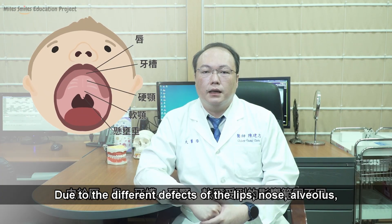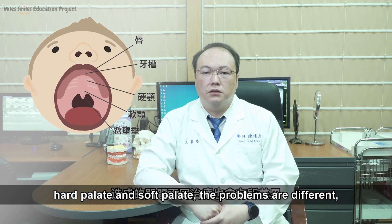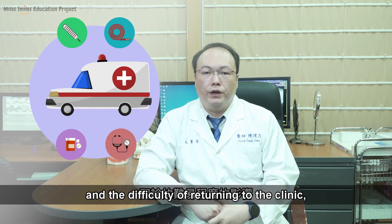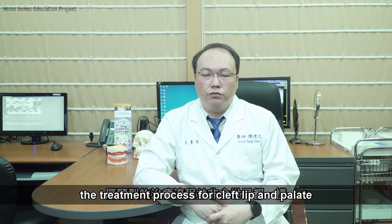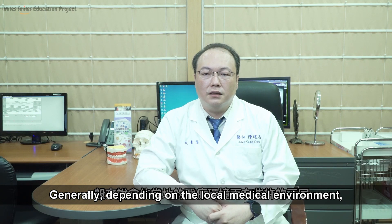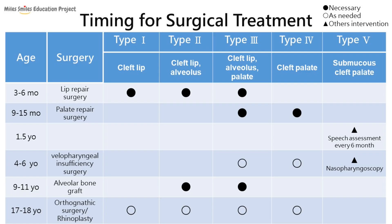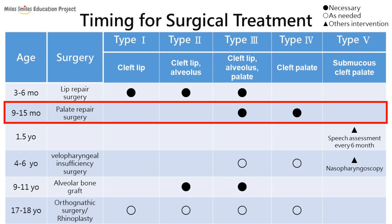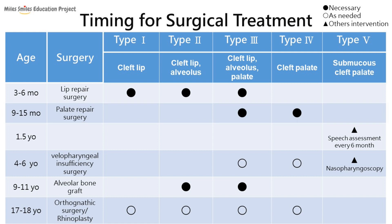Due to the different defects of the lips, nose, alveolus, hard palate, and soft palate, the problems are different and the treatments will also be different. Depending on the different medical insurance systems and the difficulty of returning to the clinic, the treatment process for cleft lip and palate is not the same throughout the world. Generally, depending on the local medical environment, children with cleft lip and palate may undergo several surgeries. Lip repair surgery is generally performed when the children are between 3 to 6 months of age, and palate repair surgery is performed at 9 to 15 months. The time of surgery depends on children's individual circumstances. As for the velopharyngeal insufficiency surgery (VPI surgery), alveolar bone graft, and orthognathic surgery, it would depend on children's developmental status and follow-up assessments.